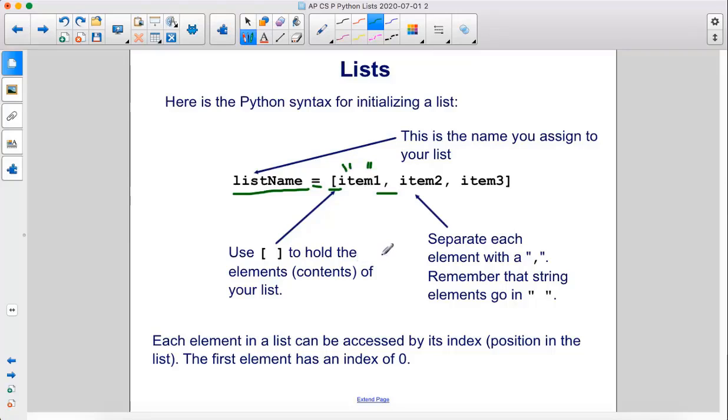Each element in a list can be accessed by its index or position in the list. The first element has an index of zero, then one, then two, and so on.